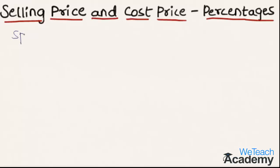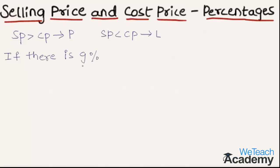We know that when the selling price is greater than the cost price there is a profit, that is a gain. And when the selling price is less than the cost price there is a loss. So if a gain percentage is given, what would be the formula to find the selling price?